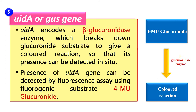Next is the UIDA gene or GUS gene. This UIDA gene encodes a beta-glucuronidase enzyme which ultimately breaks down the glucuronide substrate to a colored product. This gene can be detected by a fluorescence assay which uses the fluorogenic substrate 4-MU glucuronide, or we can also perform a histochemical assay which uses the substrate X-glucuronide. The 4-MU glucuronide substrate can be converted into a colored reaction by the beta-glucuronidase enzyme encoded by the UIDA or GUS gene. So this is also one of the genes used as a reporter gene.